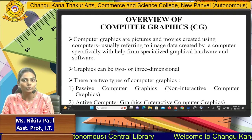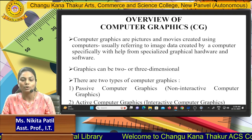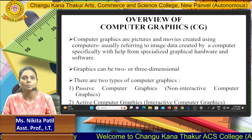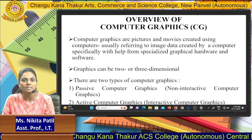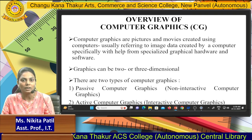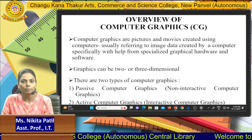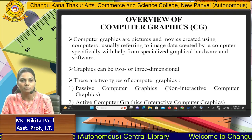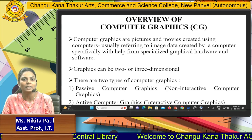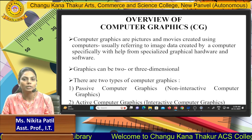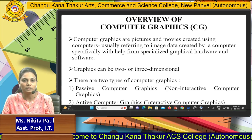There are two types of computer graphics. First is passive computer graphics, which is non-interactive computer graphics. Second is active computer graphics, which is interactive. Passive computer graphics involves communication between the computer and multiple users, while active computer graphics involves communication between a single user and the computer.